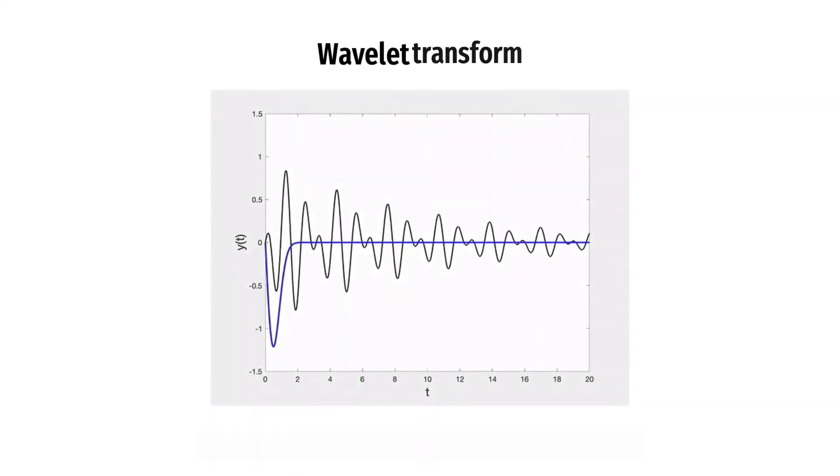Here, we pick a wavelet of a particular scale and slide this across the entire signal. At each time step, we multiply the wavelet and signal to get a coefficient. We then repeat the process at different scales.